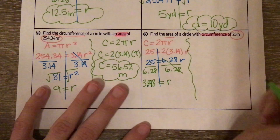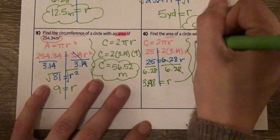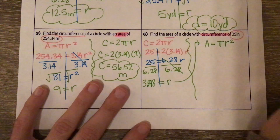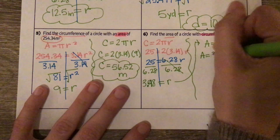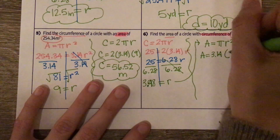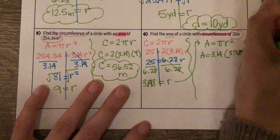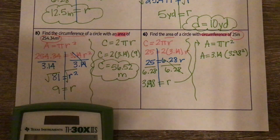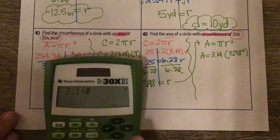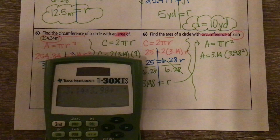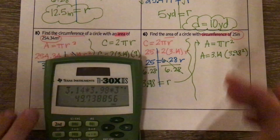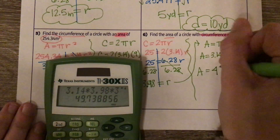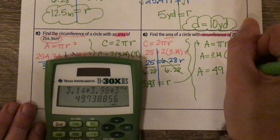Then we're going to use this to find our area. Area equals πr², so our area equals 3.14 times 3.98 squared. I'll plug that into my calculator: 3.14 times 3.98 times 3.98. I get a long decimal, and rounding to the nearest tenth gives us 49.7 centimeters squared.